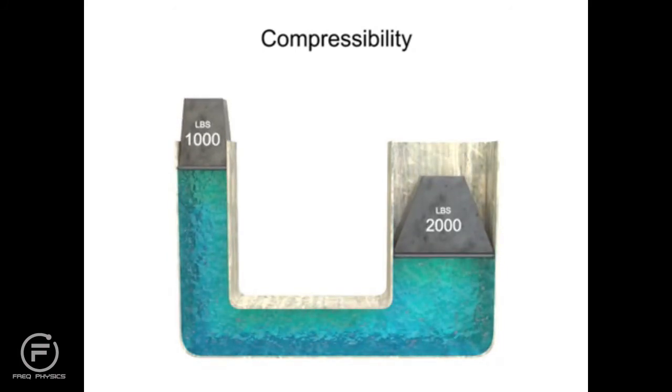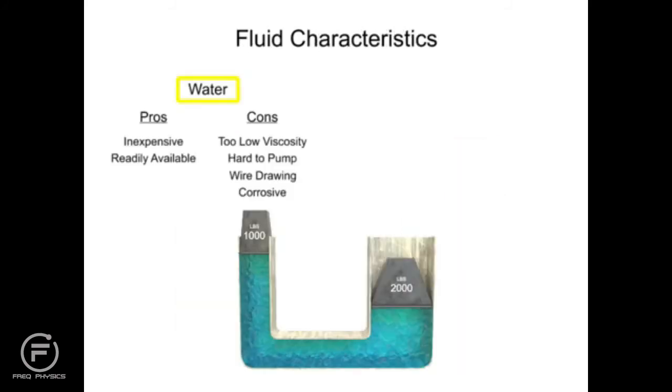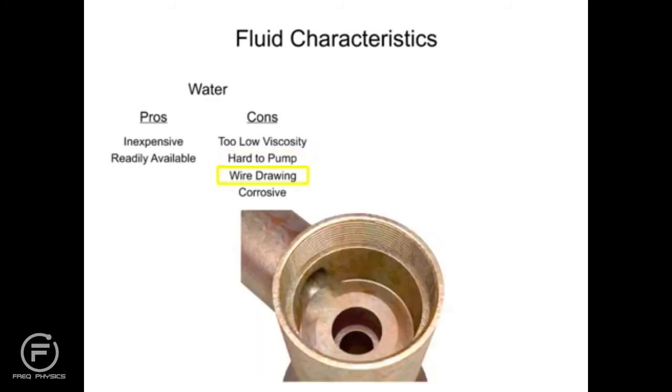Years ago, water was used as the first hydraulic fluid because there was no other liquid available in such large quantities at such a low cost. There are some major drawbacks to using water as a working fluid. Due to its low viscosity, it is difficult to pump. Additionally, the speed at which it flows through the system causes an effect known as wire drawing. Wire drawing occurs when the water flow erodes or scores a pathway in the metal of machinery as it goes around corners and through orifices. It also has corrosive effects on metal machinery.